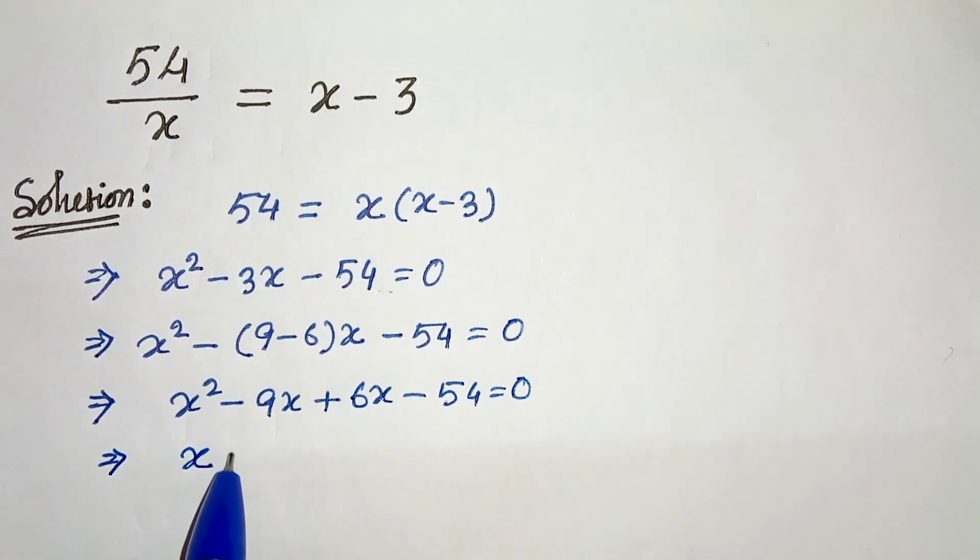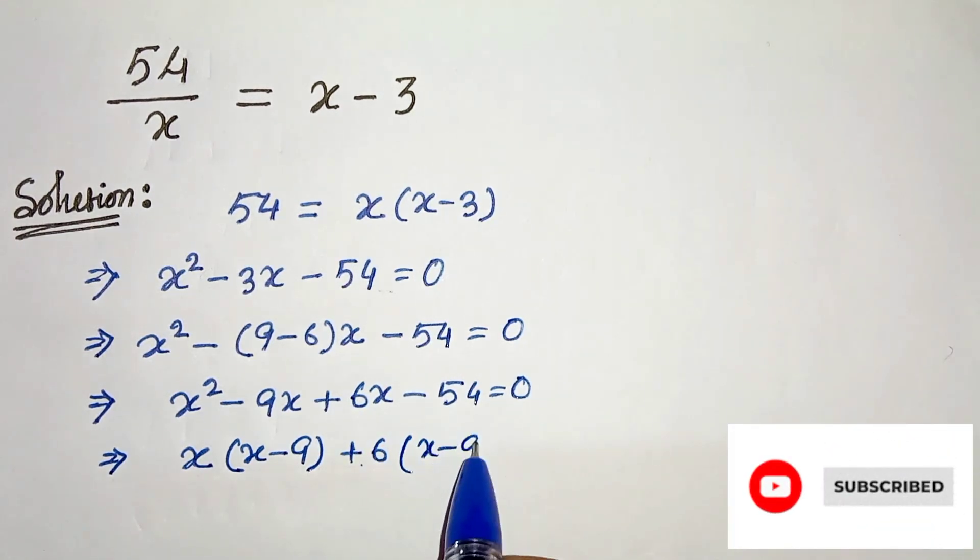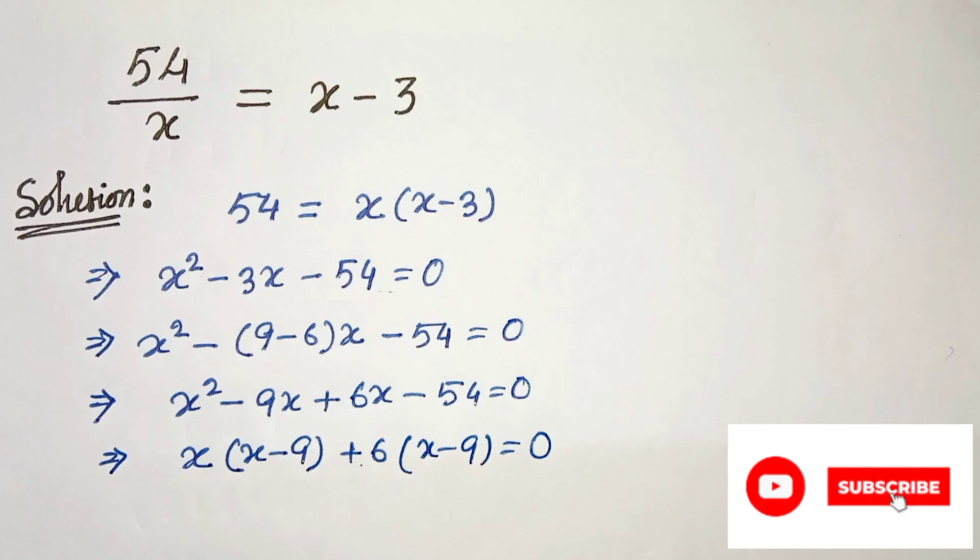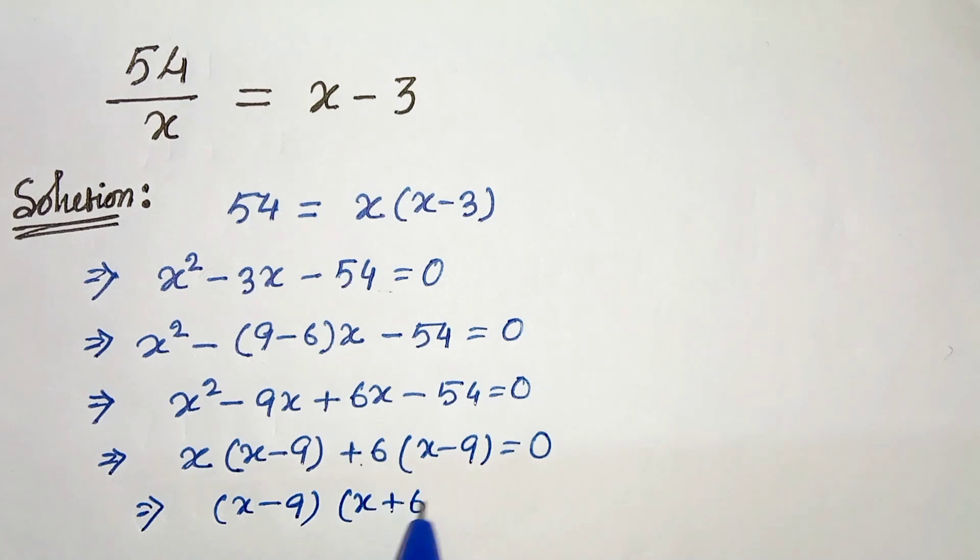So now let us take common: x times x minus 9, plus 6 times x minus 9 equals 0. In the next step, we will get x minus 9 times x plus 6 equals 0.